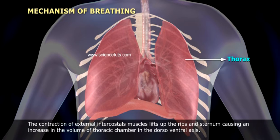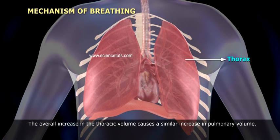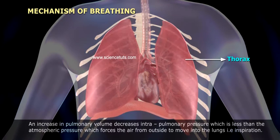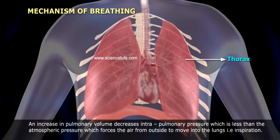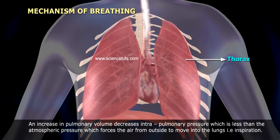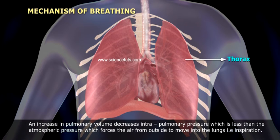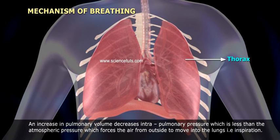The overall increase in the thoracic volume causes a similar increase in pulmonary volume, creating a pressure gradient that allows air to move into the lungs — that is, inspiration.